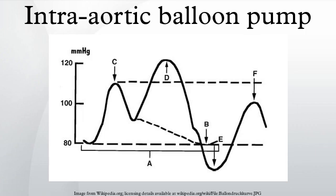It consists of a cylindrical polyethylene balloon that sits in the aorta, approximately 2 cm from the left subclavian artery and counterpulsates. That is, it actively deflates in systole, increasing forward blood flow by reducing afterload through a vacuum effect.